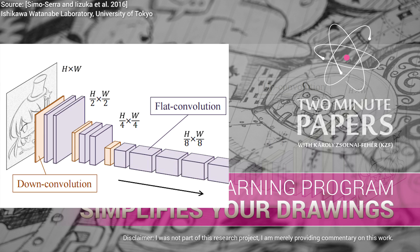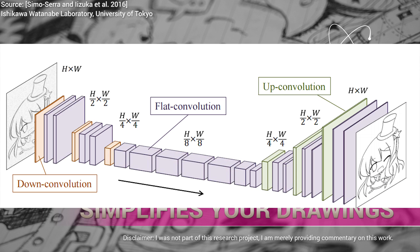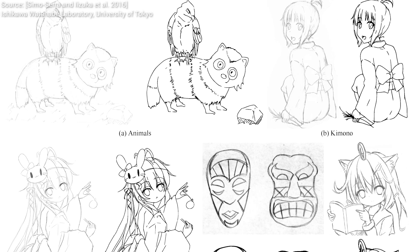However, this is no ordinary convolutional neural network. This particular variant differs from the standard, well-known architecture, as it is augmented with a series of upsampling convolution steps. Intuitively, this algorithm learns a sparse and concise representation of these input sketches. This means that it focuses on the most defining features and throws away all the unneeded fluff. The upsampling convolution steps make it able to not only understand, but synthesize new, simplified and high-resolution images that we can easily vectorize using standard algorithms. It is fully automatic and requires no user intervention.